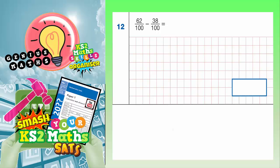Question 12: 62 hundredths take away 38 hundredths. Well, the fact that we've got two fractions here, both with common denominators, the denominator is like the unit, so we're dealing with hundredths.